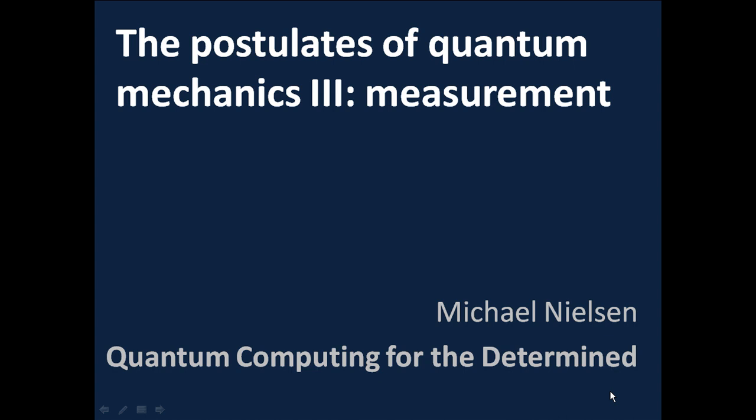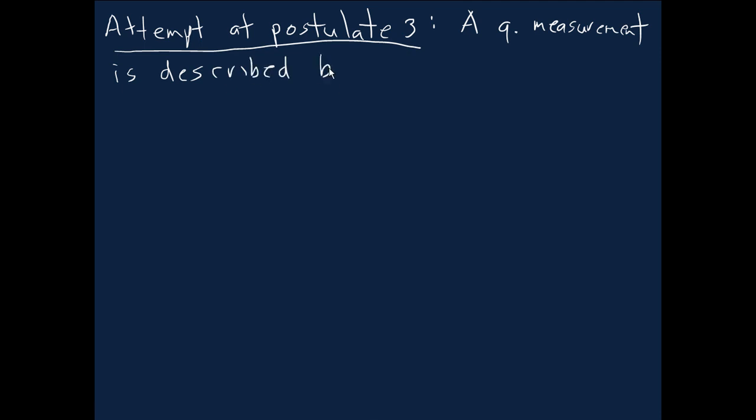Unlike the last two videos, instead of jumping in and just describing outright the postulate, we're going to start with a warm-up, a dry run so to speak. It's an attempt at postulate three rather than the full-blown postulate itself. What this attempt says is that the way we describe a quantum measurement is described using an orthonormal set of vectors for the state space of the physical system in question. We're going to call the elements of that basis Ej, so it could be any old orthonormal basis for the state space. This is the basic mathematical description or how we specify the measurement.